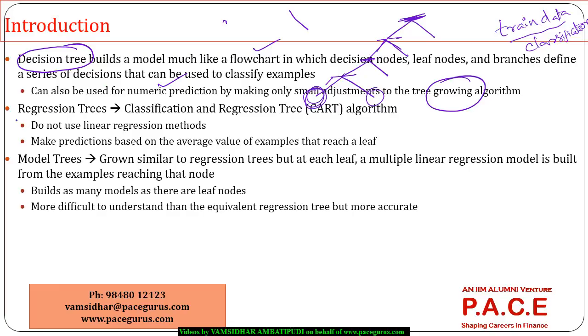Within that, we talk about two different kinds of trees, especially for prediction of your numerical variables. Regression trees, which generally implement what is called as a CART algorithm, classification plus regression, both put together. So that is the reason it is called as a CART algorithm.